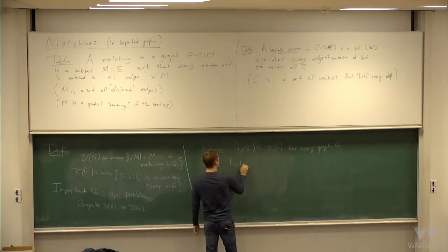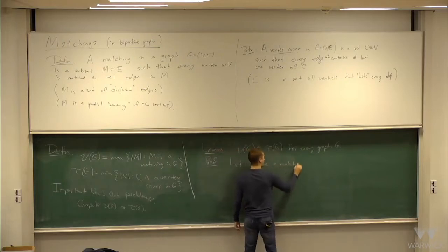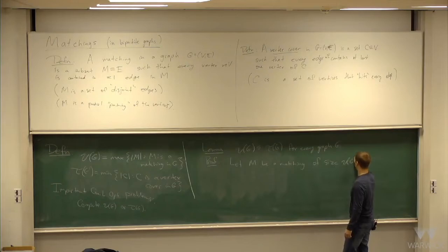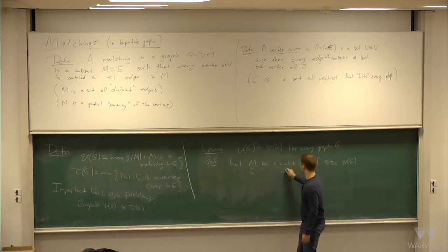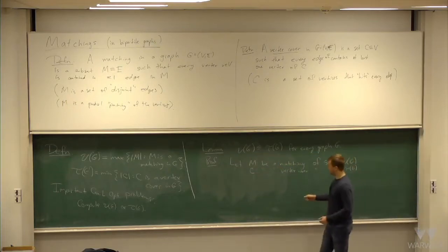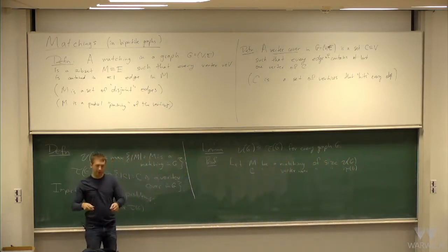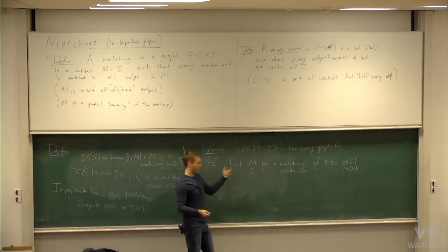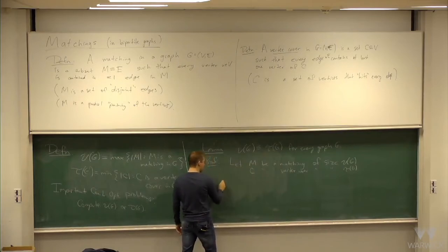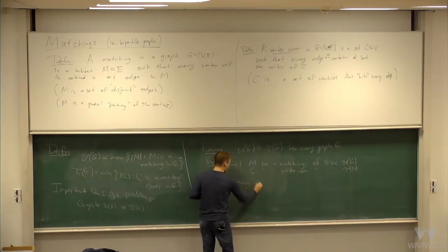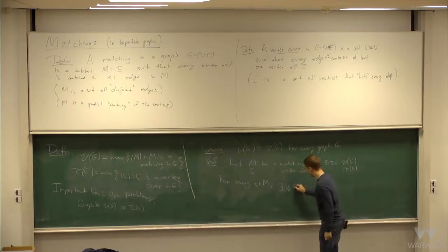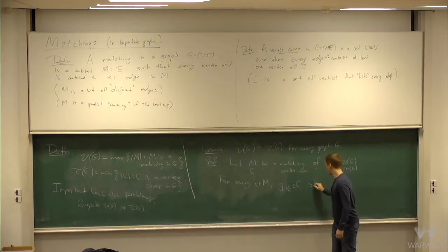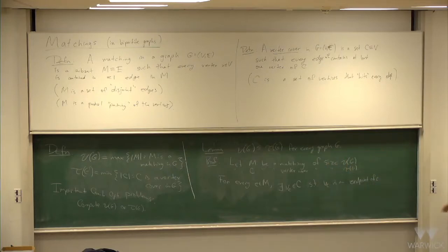Let M be a matching of size nu of G — so it's the biggest possible matching — and let C be a vertex cover of size tau of G, the smallest possible one. A vertex cover is a set of vertices which hits all the edges, and a matching is a set of disjoint edges. So C hits all the edges; in particular, since C is a vertex cover, for every edge e in M, there exists some element v_e of the vertex cover such that v_e is an endpoint of e.